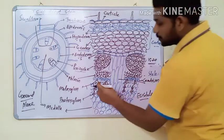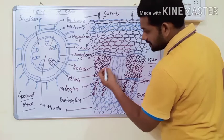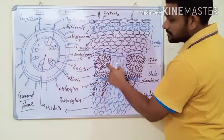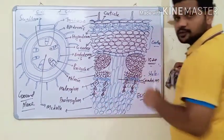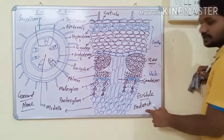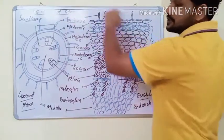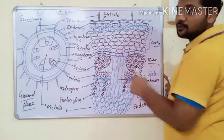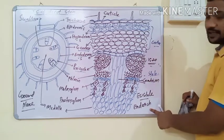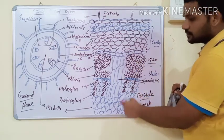Regarding the position of primary xylem: metaxylem is towards the pericycle and protoxylem is towards the medulla. If metaxylem is towards the outer side and protoxylem towards the inner side, the position of primary xylem is known as endarch. Endarch type of primary xylem is the characteristic feature of stems, whether dicot or monocot.